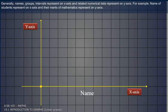Generally, names, groups, and intervals are represented on the x-axis and related numerical data is represented on the y-axis. For example, names of students are represented on the x-axis and their marks in mathematics are represented on the y-axis.